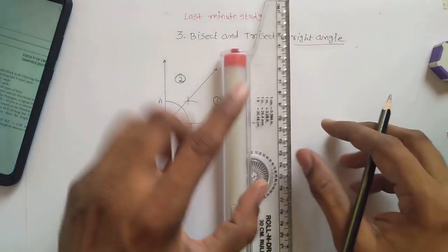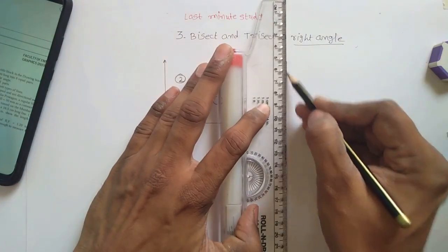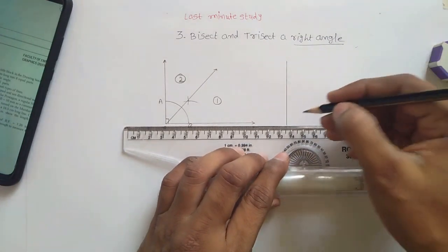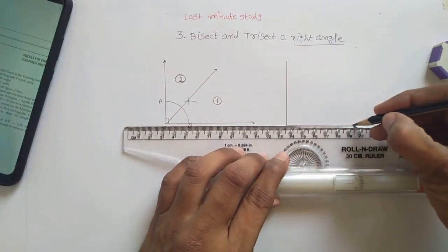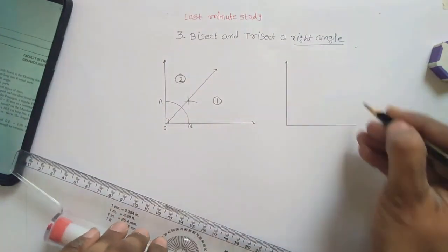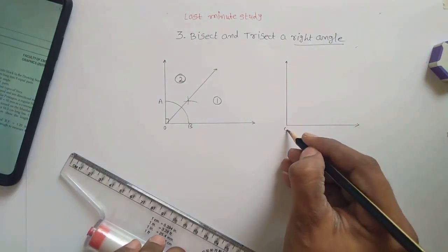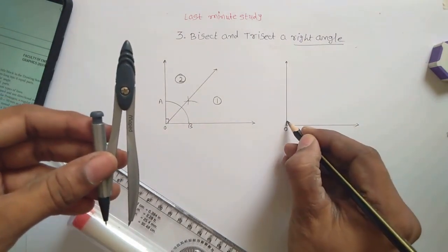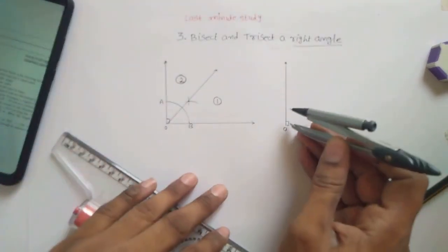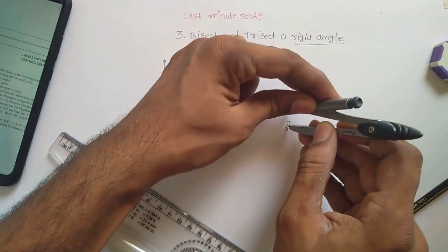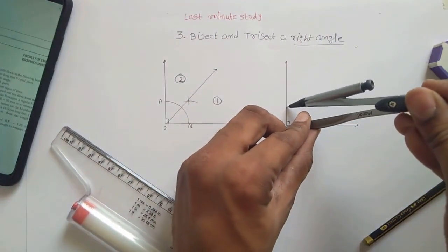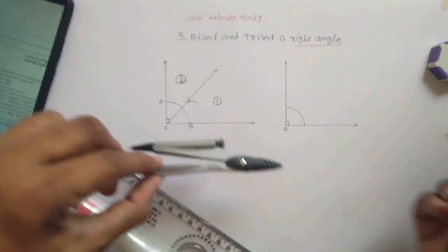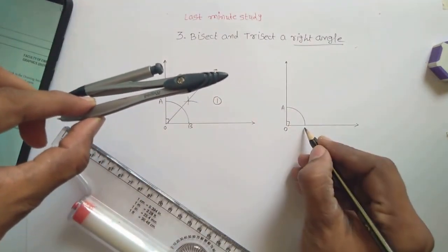For that, draw two perpendicular lines to create a right angle. Give names to them. This is O. Now same, this is perpendicular. Same, at random distance, make an arc like this. This is point A. This is point B.